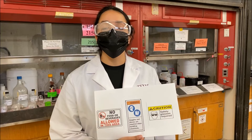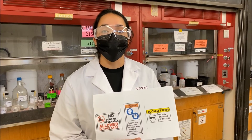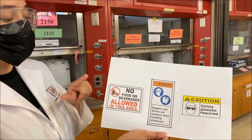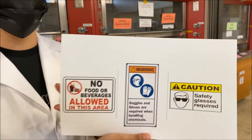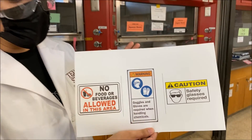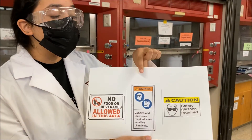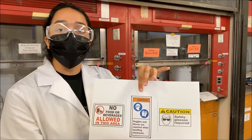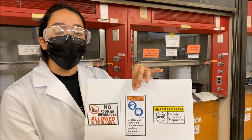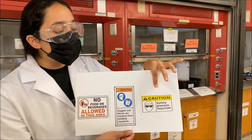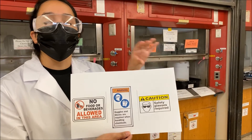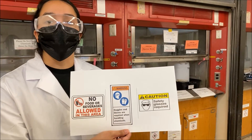Some other important signs to note in the lab: we are not allowed to have any food or beverages inside the lab. You must use gloves and goggles at all times when handling chemicals, and safety glasses are required at all times in the lab.